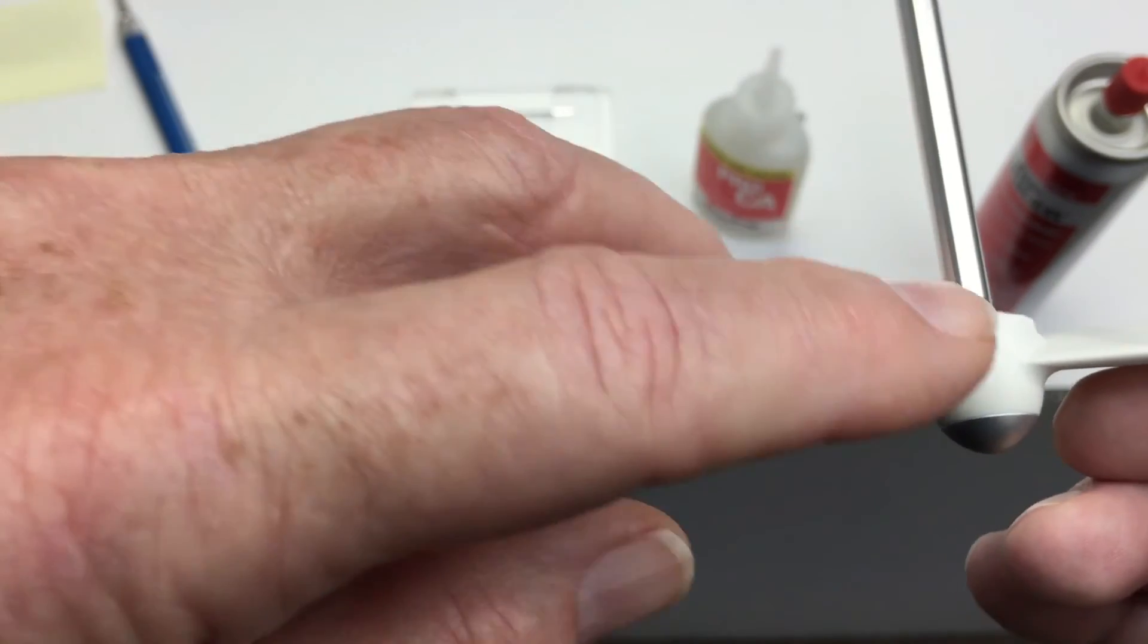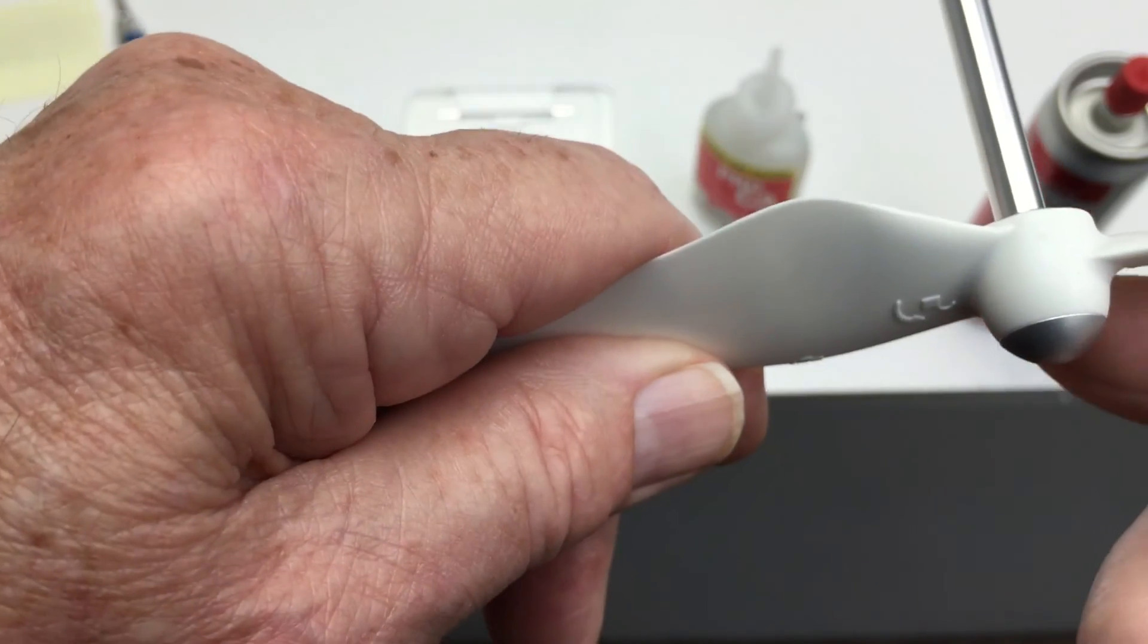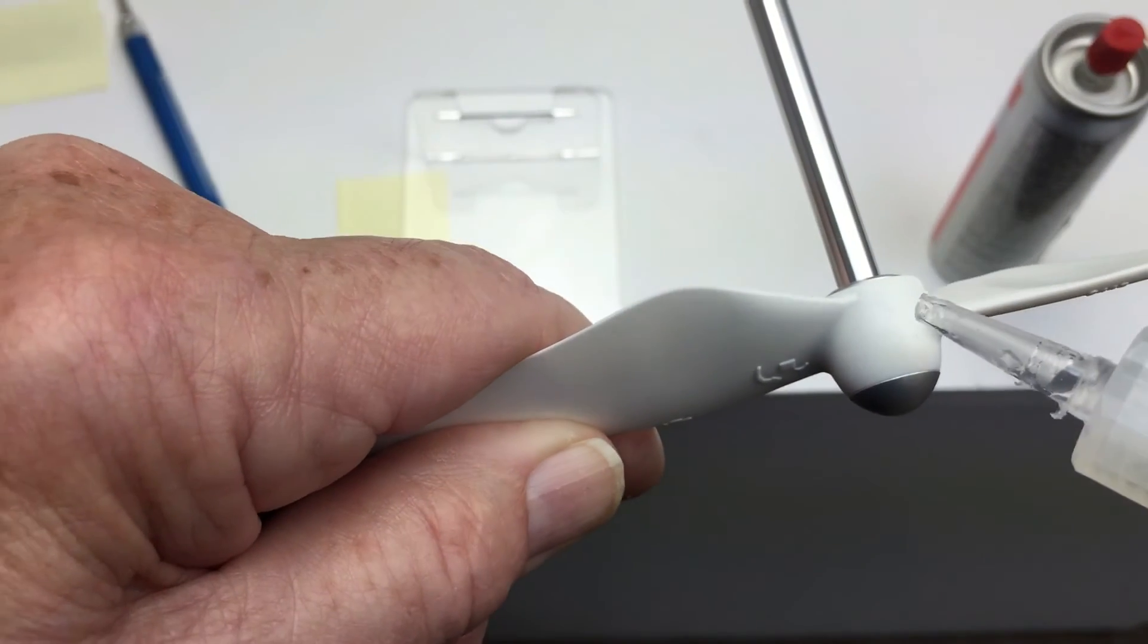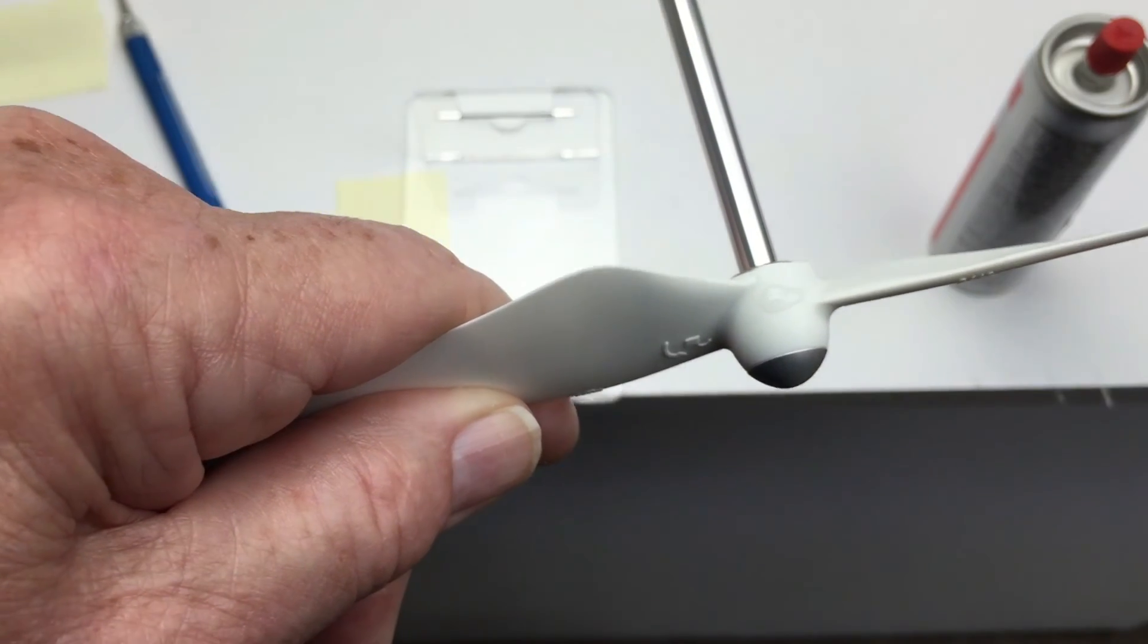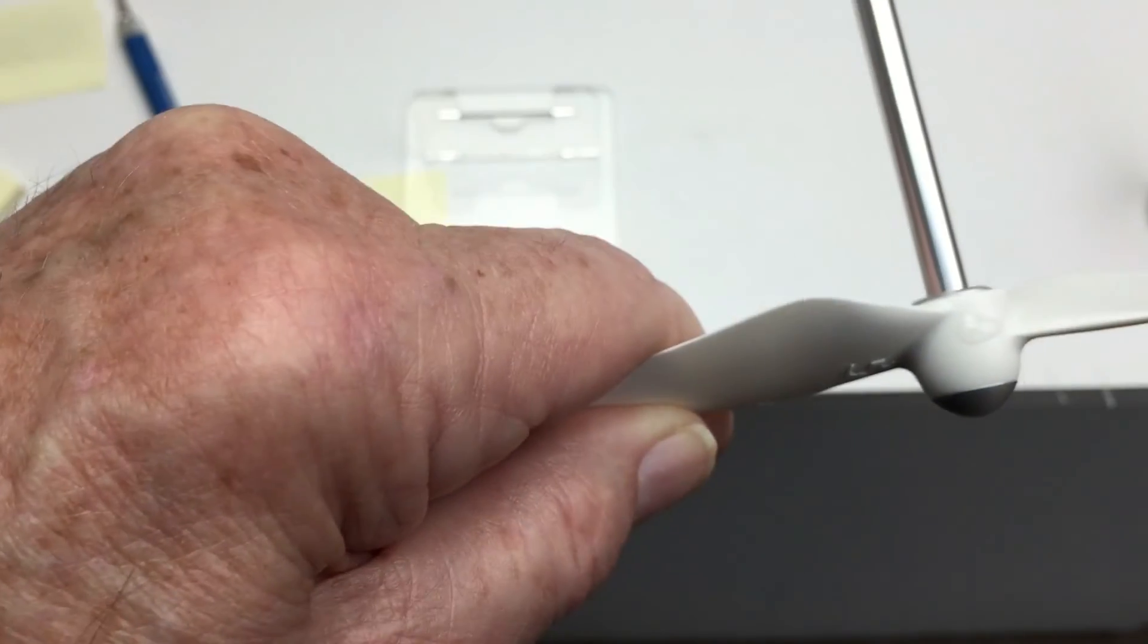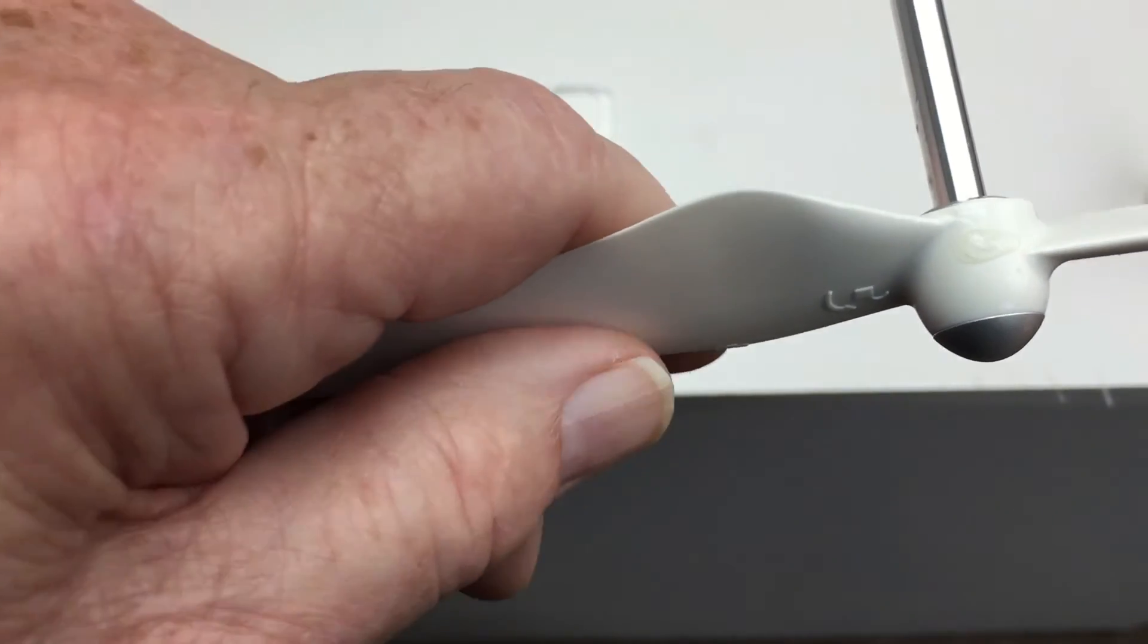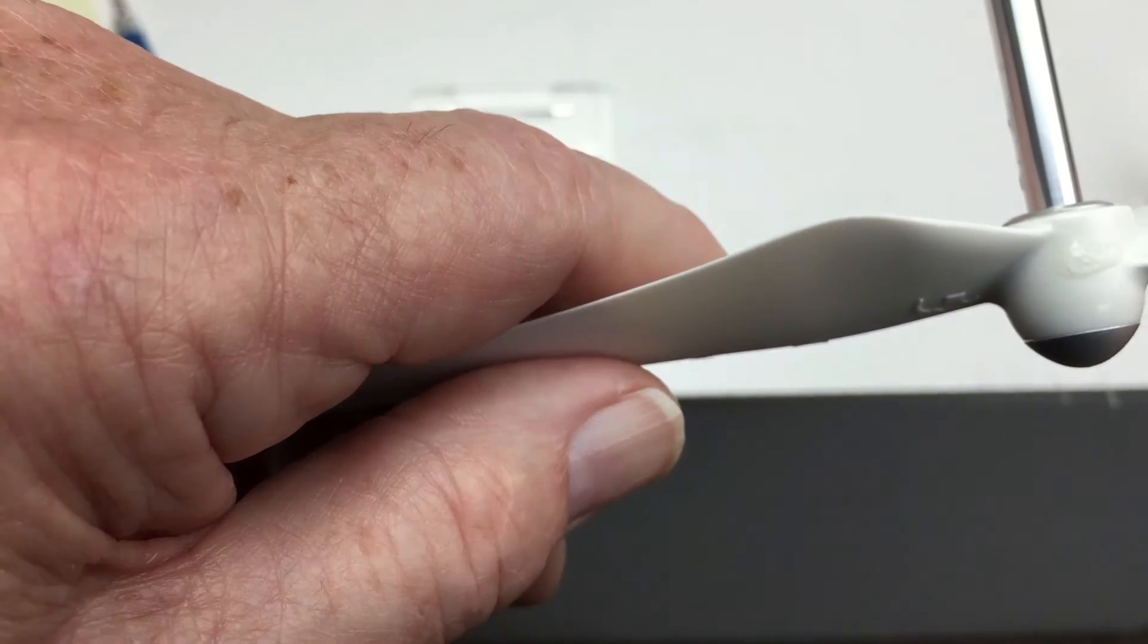Let's say you determine that this is the light side of the prop and you want to overcome the heavy side. What you do is simply take super glue and put a little bit of weight on there, and you hit it with a zip kicker. It becomes really hard, really fast, and it's good for adding weight.